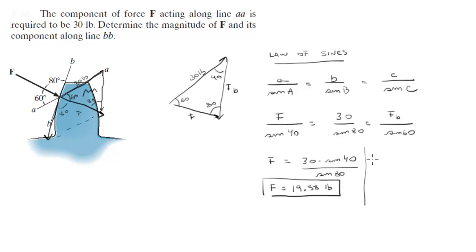And FB is equal to 30 sine of 60 over sine of 80, which means that FB is equal to 26.38 pounds.